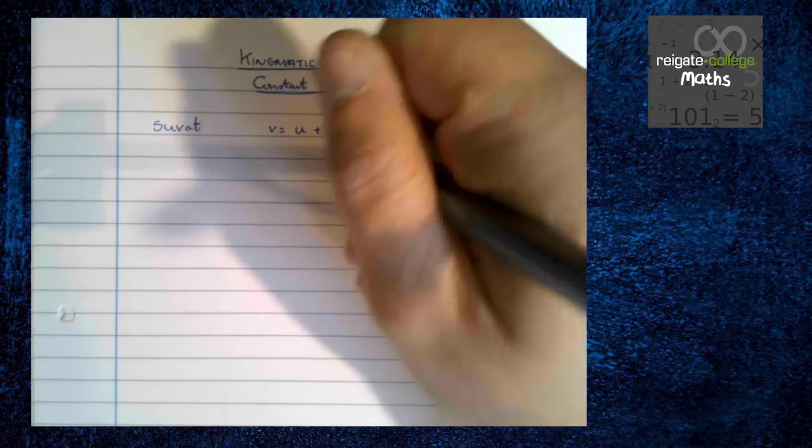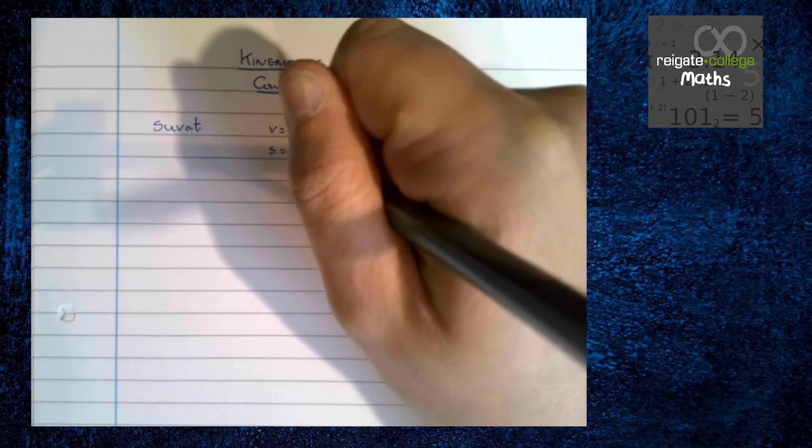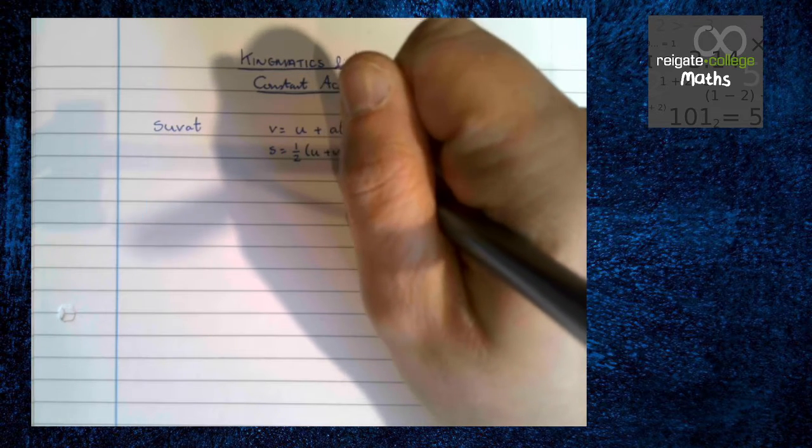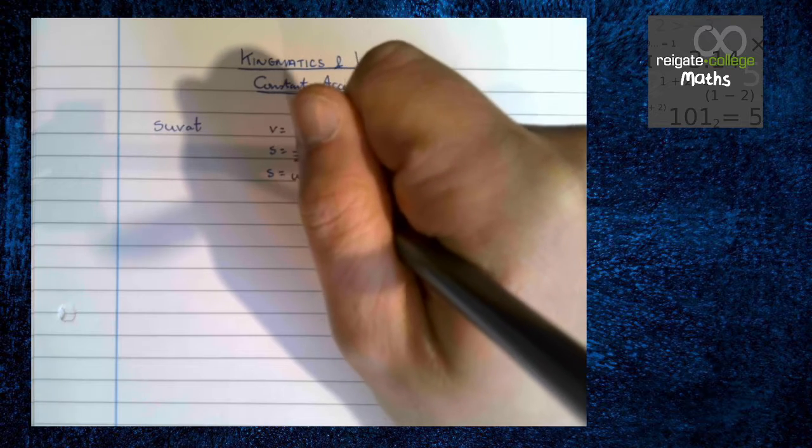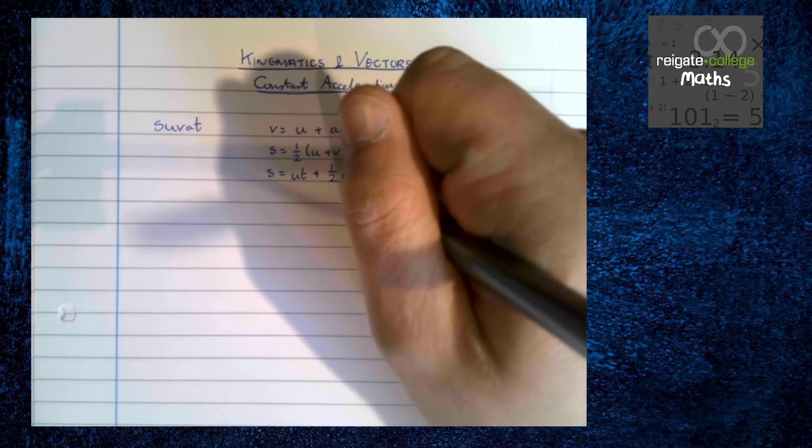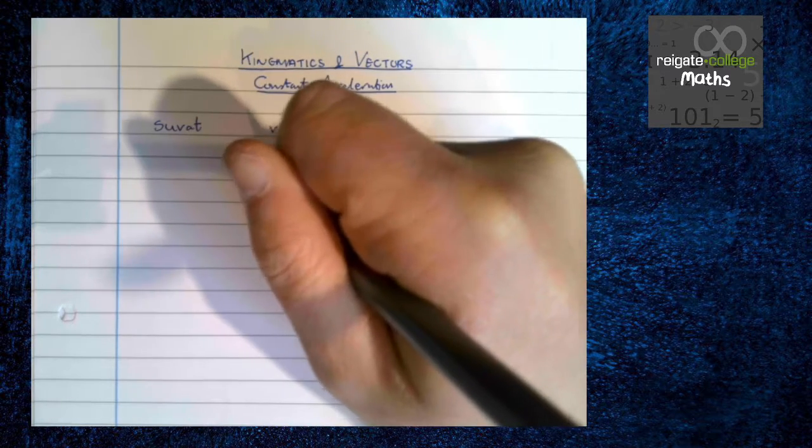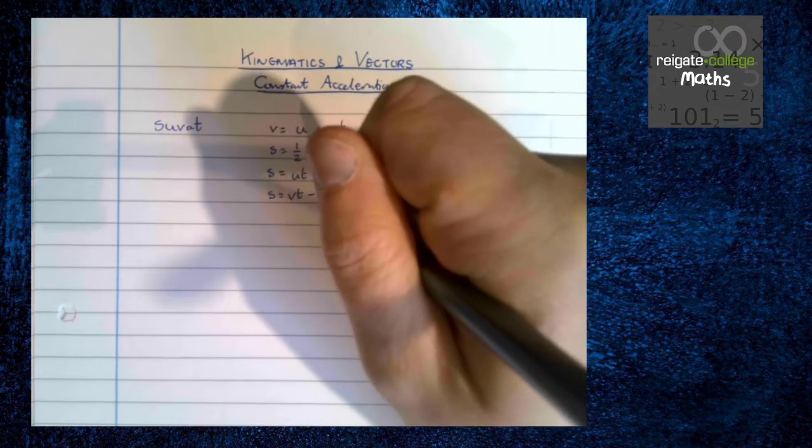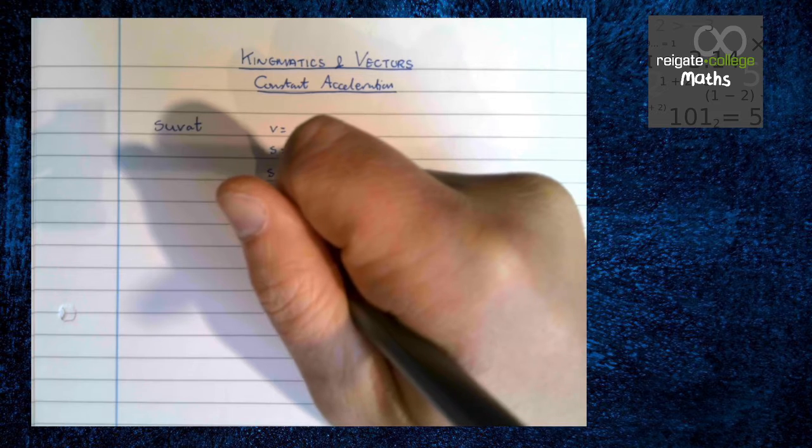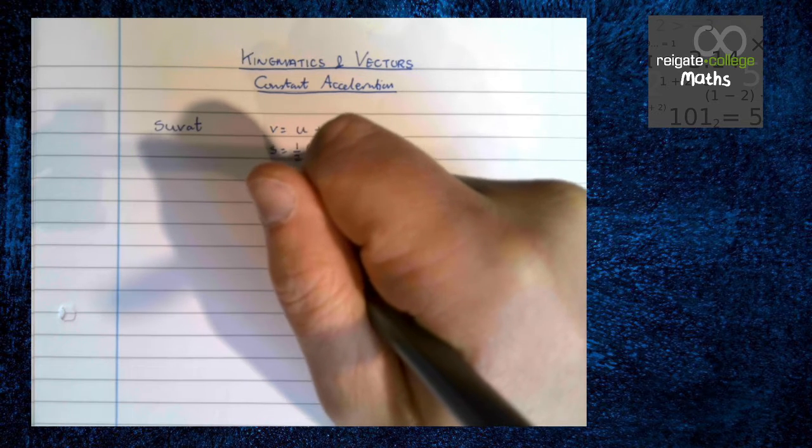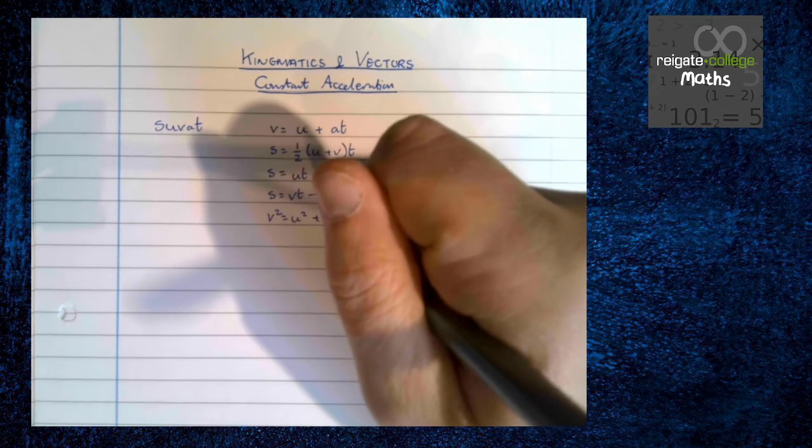Okay, the SUVAT equations as you're given in the formula book: v equals u plus at, s equals a half u plus v times t, s equals ut plus a half at squared, s equals vt minus a half at squared, and v squared equals u squared plus 2as.